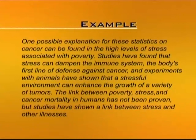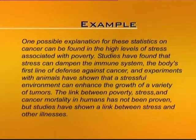'One possible explanation for these statistics on cancer can be found in the high levels of stress associated with poverty. Studies have found that stress can dampen the immune system — the body's first line of defense against cancer — and experiments with animals have shown that a stressful environment can enhance the growth of a variety of tumors. The link between poverty, stress, and cancer mortality in humans has not been proven, but studies have shown a link between stress and other illnesses.' In this analysis, they told us the links between cancer and stress, what has been proven, and what different studies have shown.